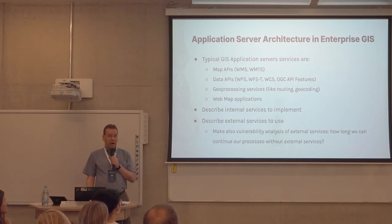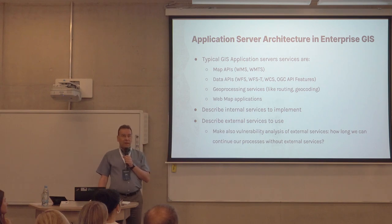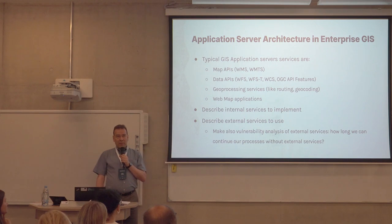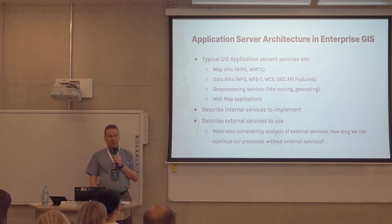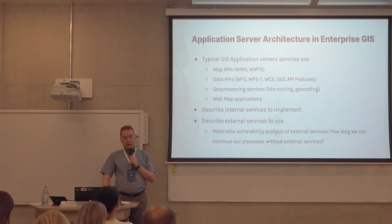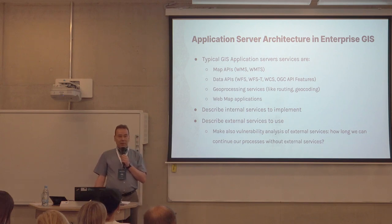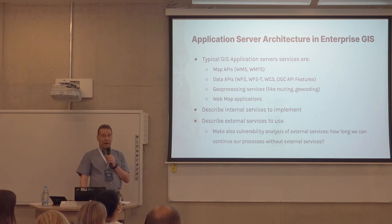Application server architecture. Usually there are map APIs, WMS, WMTS, and data APIs — whatever you want. Some geoprocessing services, web maps. You want to describe your internal services. But also think about whether you are using outside services — how long can you stay in business when something goes bad? Usually we have customers who can live hours or days without outside services, but in some cases it's minutes or seconds. So if you are using outside GIS services, you have to account for that.